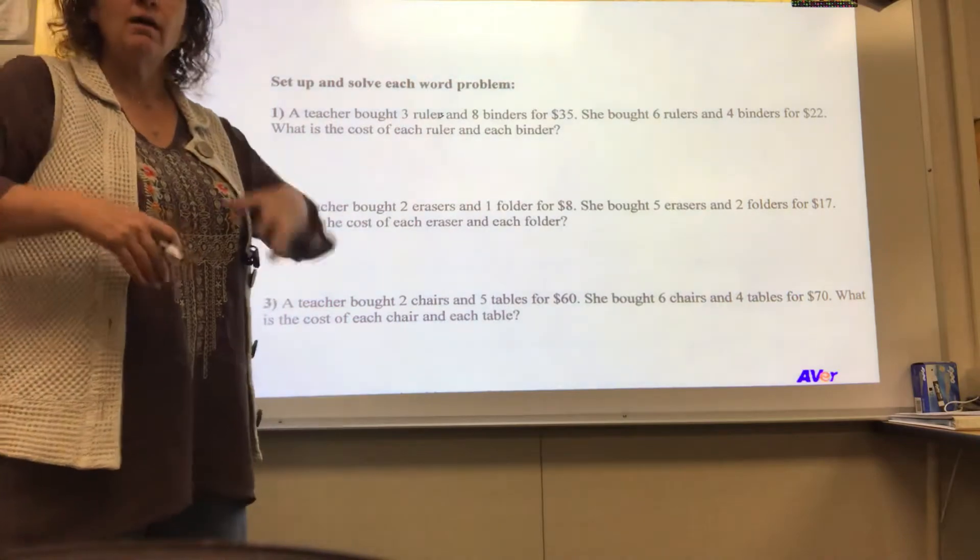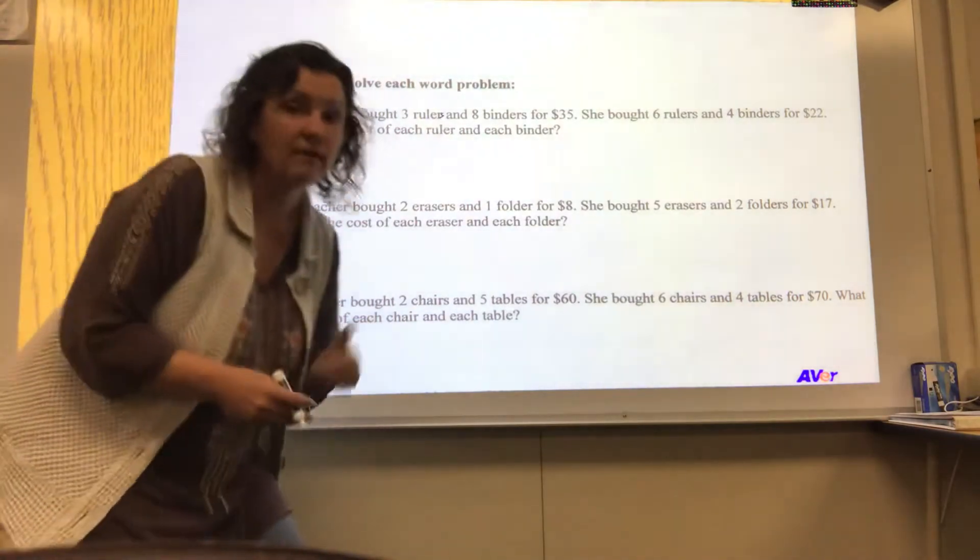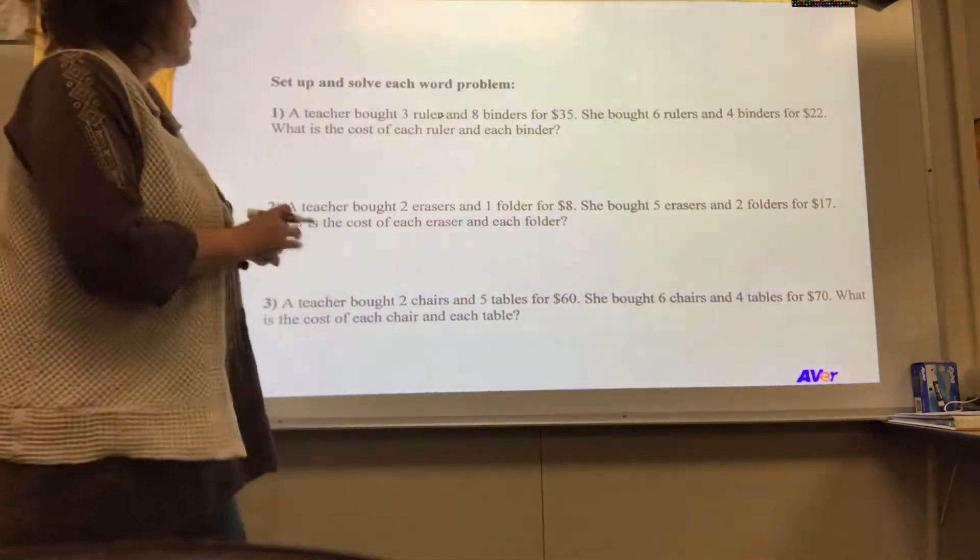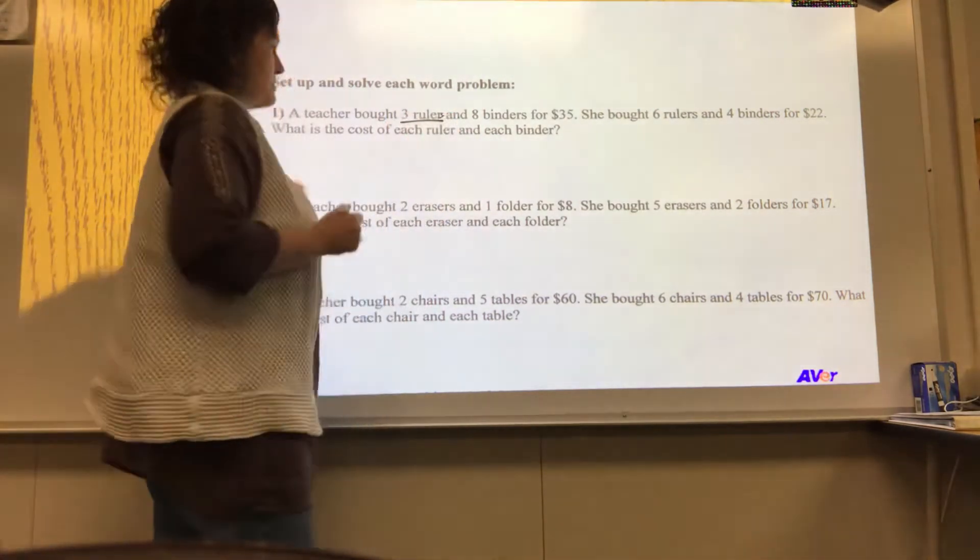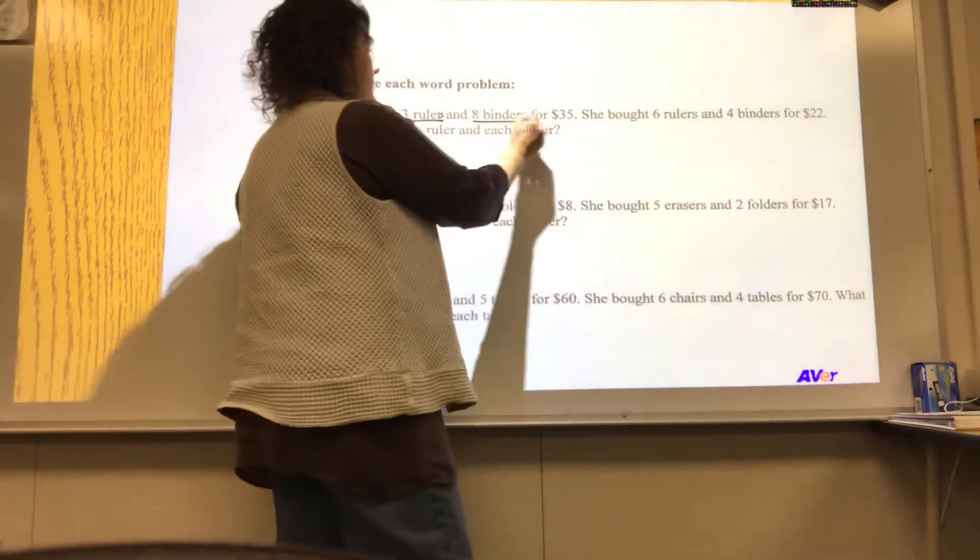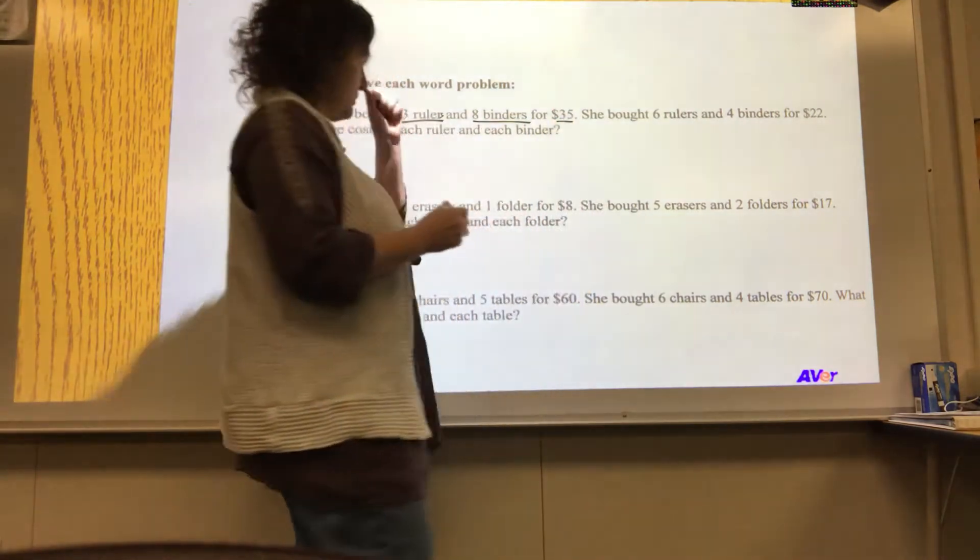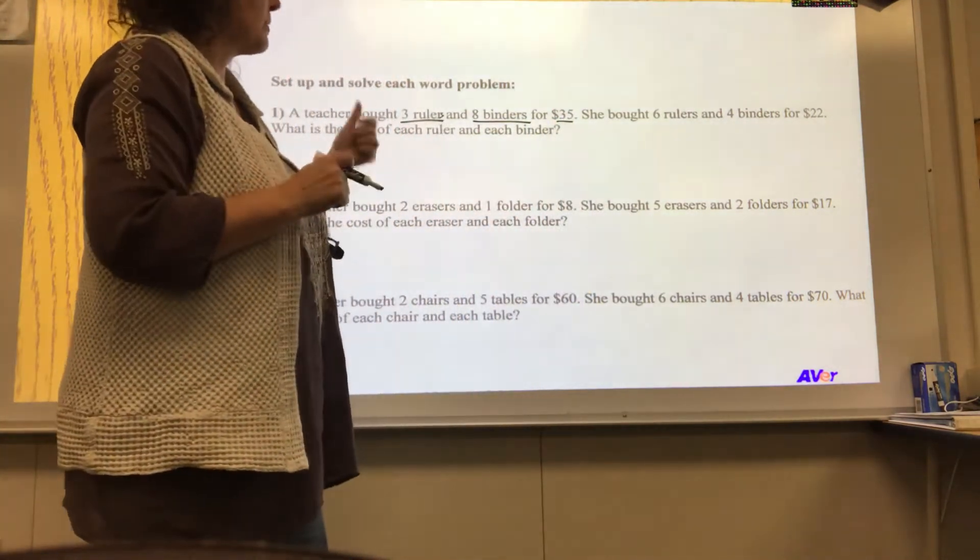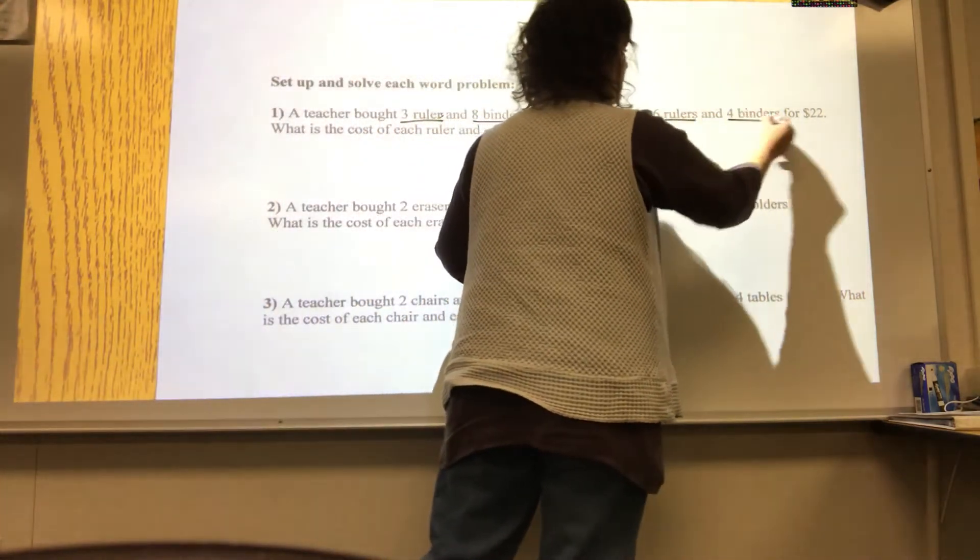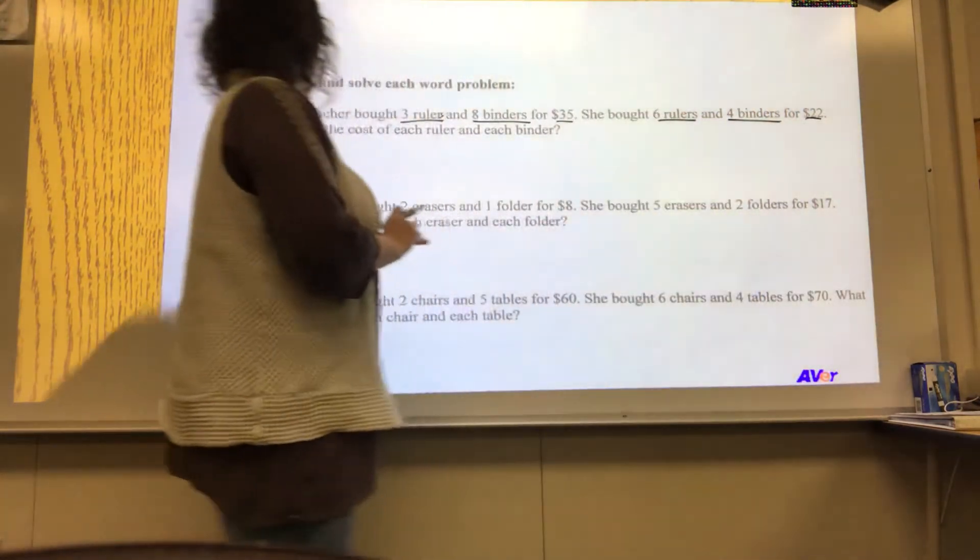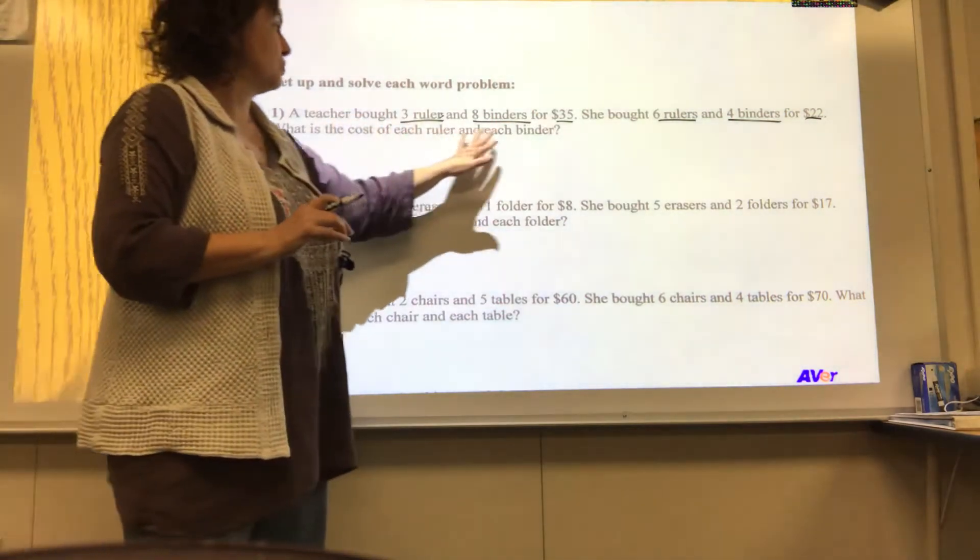Now let's read it again, underlining what we think are valuable bits of information. So a teacher bought three rulers. That seems important. Eight binders. $35. Yes, I'm going to concur. That's important. Next, she bought six rulers. Woo-hoo. Four binders. $22. What is the cost of each ruler and each binder?